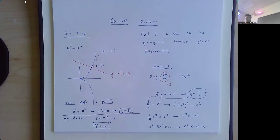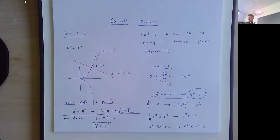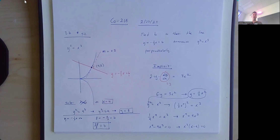So b equals 28/3. That's a complicated question with a lot of moving pieces — figuring out what to set the derivative equal to, solving for the point of intersection, then finding b.